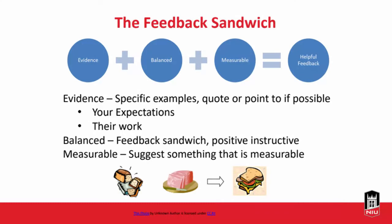We have what we call the feedback sandwich. The idea is that we're going to have three different components. The first part is to talk about specific evidence — very specific instances so that your students understand what you're grading them on. Point to specific passages, quotes, facts, statistics, specific sentences. They're going to want feedback directly related to their writing — they're not going to want to wonder where in their project you noticed something.